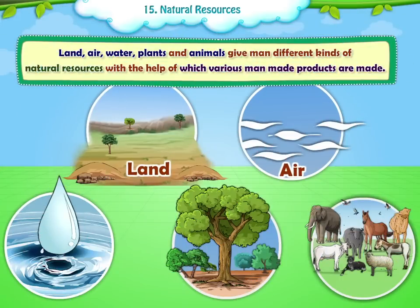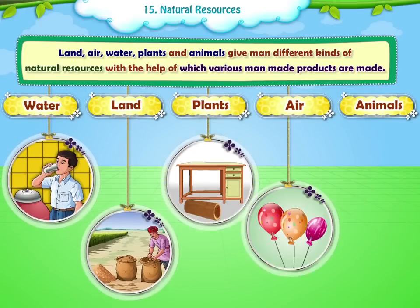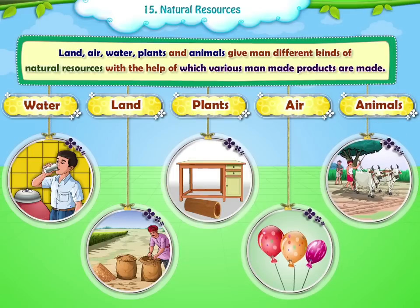Land, air, water, plants and animals give man different kinds of natural resources, with the help of which various man-made products are made. Let's have some information about them.